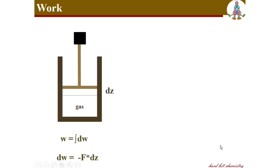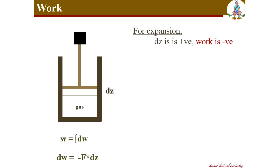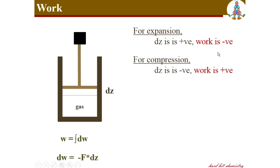Coming back to our gas system, there is an external pressure applied by the piston, and against that, work is done in individual steps with displacement dz. We can write the small work dw as a function of force and displacement. For expansion work, dz is positive because it happens upward, and this product gives a negative work — confirming that expansion work is negative. For compression work, dz is negative because the piston moves downward, so this product gives a positive dw — confirming that compression is positive work.